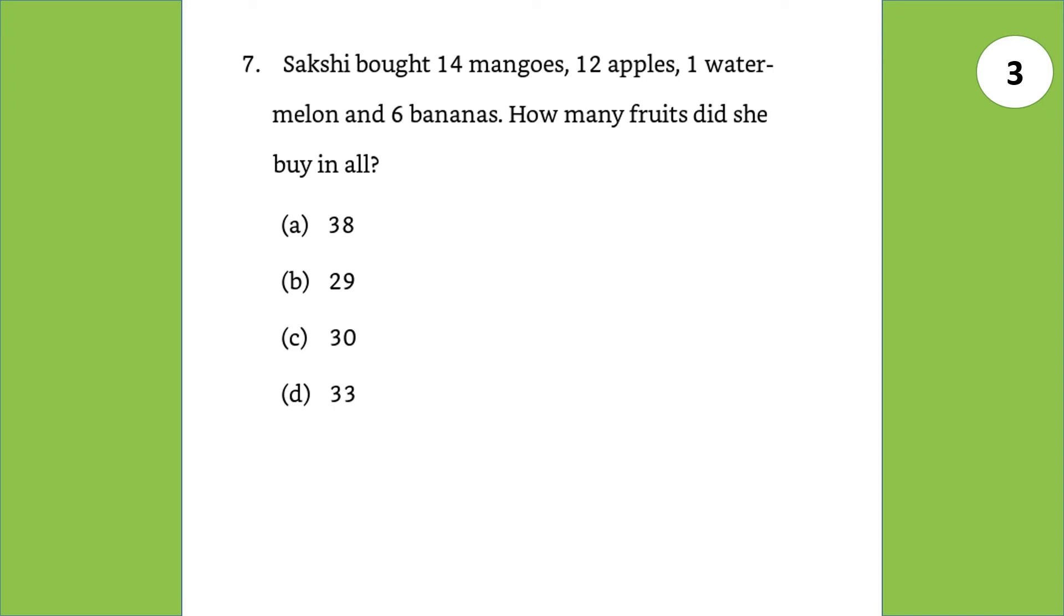Sakshi bought 14 mangoes, 12 apples, 1 watermelon and 6 bananas. How many fruits did she buy in all? So, 14 plus 12 plus 1 plus 6. So, it comes out to be 33.